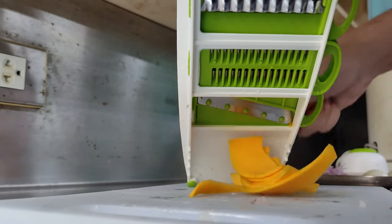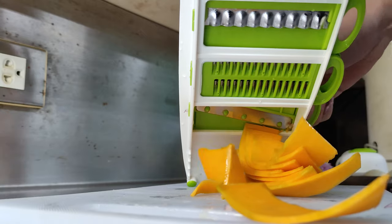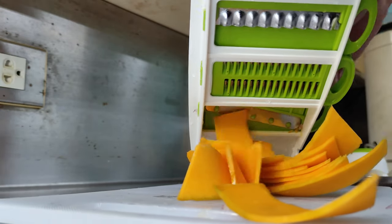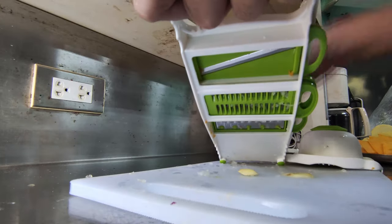Now we have the actual mandolin blade slicer. It only goes one thickness. It's also very sharp. It's able to slice squash, potato, and many other ingredients into a very thin chip-like structure.